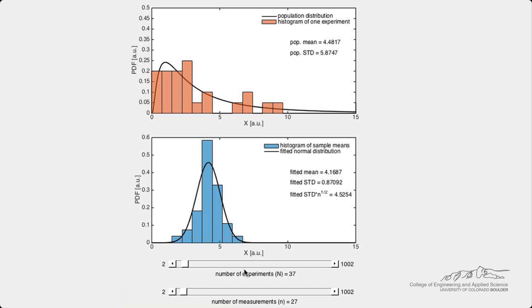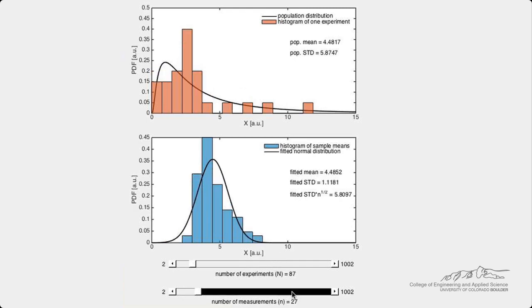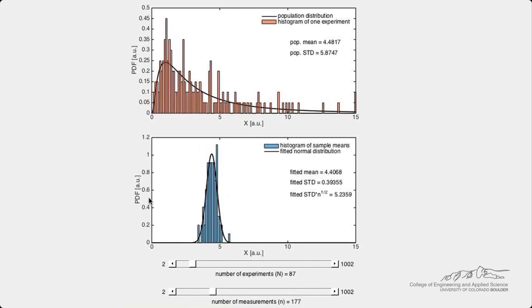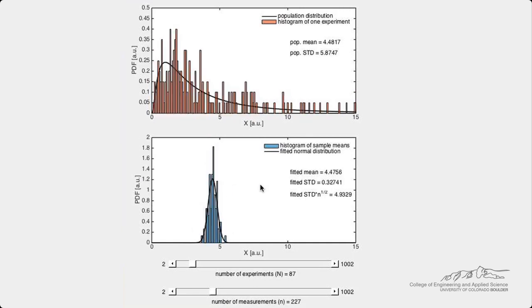We can define the number of experiments and the number of measurements with the slider bar, and we can clearly see that when the number of measurements is greater than 30, visually, the means of these measurements from each experiment follow a normal distribution as suggested by the central limit theorem.